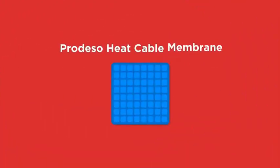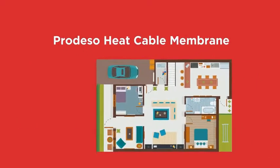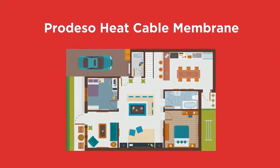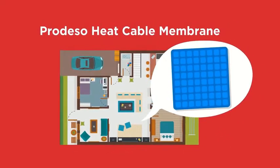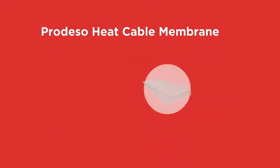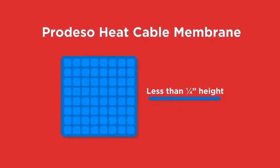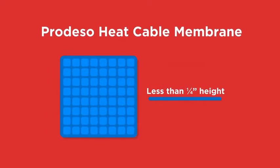The third option uses the Prodesso heat cable membrane to install our cable system. Identical to the DITRA heat membrane, you can install the Prodesso heat cable membrane system directly over the entire subfloor. This eliminates the need for backer board and the height of the membrane is less than a quarter inch, which allows for a very low profile.